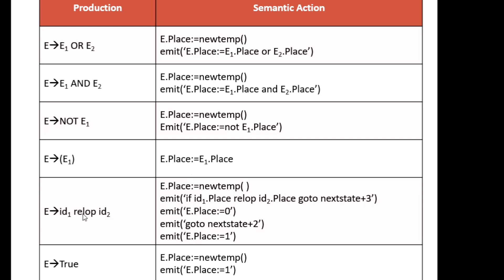RELOP is a relational operator — greater than, less than, greater than or equal to, less than or equal to, not equal to — all are called relational operators. If a relational operator is given, E.place = newtemp. Then: if id1.place RELOP id2.place, go to nextstate + 3. If the condition is false, we make E.place = 0, go to nextstate + 2. If the condition is true, we make E.place = 1. This is how a three-address code is generated for a relational operator expression.